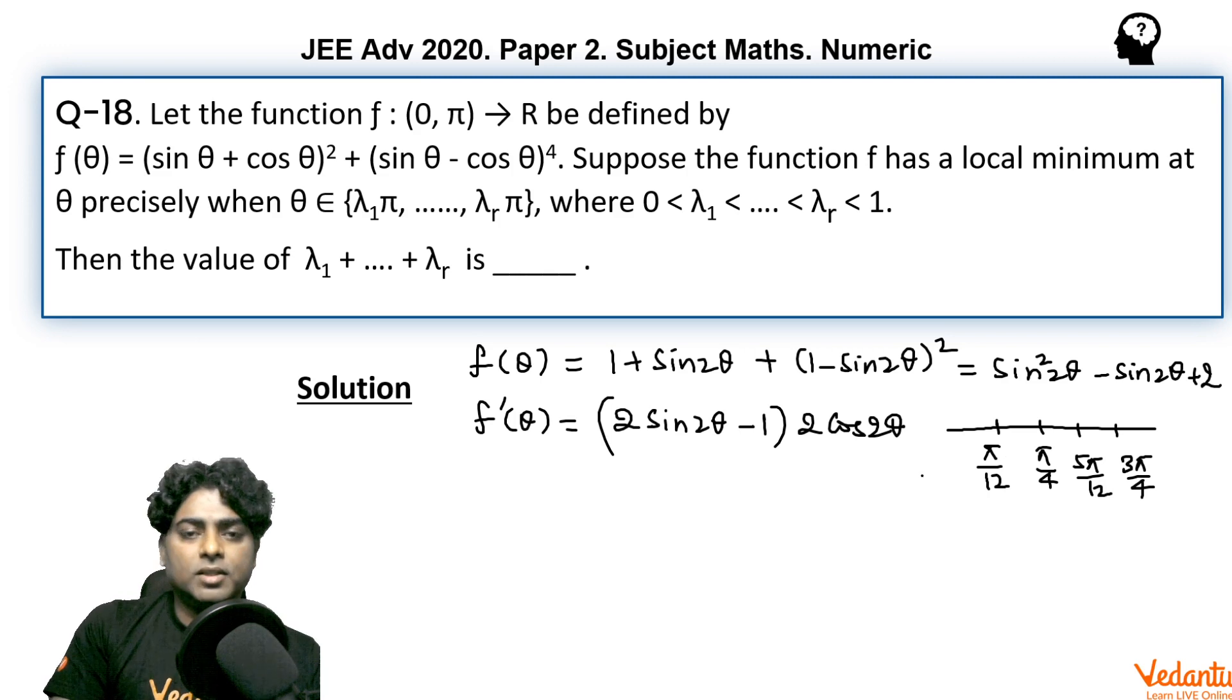If you take some number in any of these intervals, like start with the very first interval, if you take some angle close to zero, just more than zero, you can see that the first bracket is negative and the second is positive, so here it should be minus sign. The derivative f' is negative from 0 to π/12.